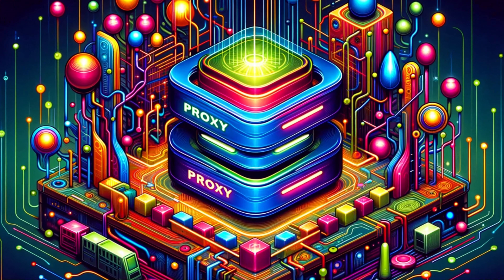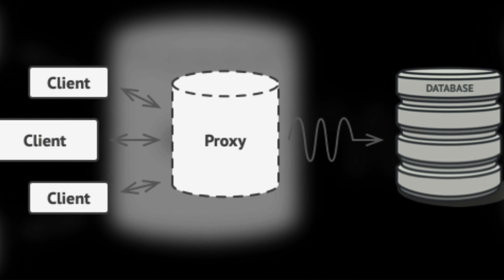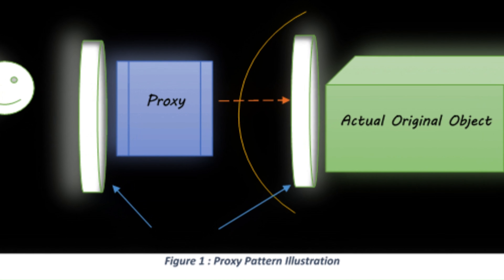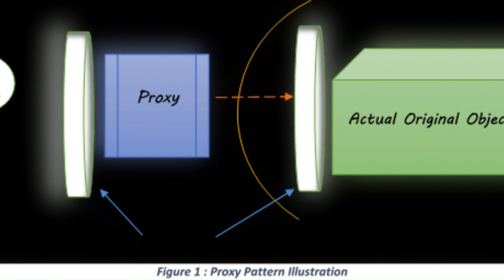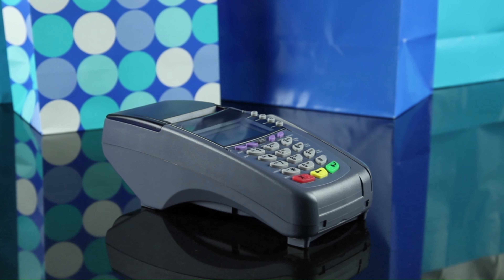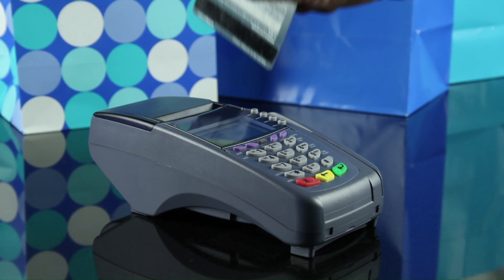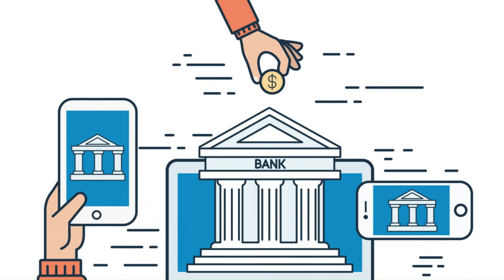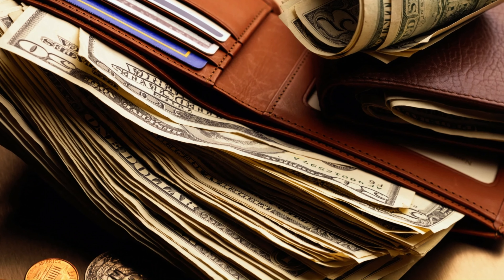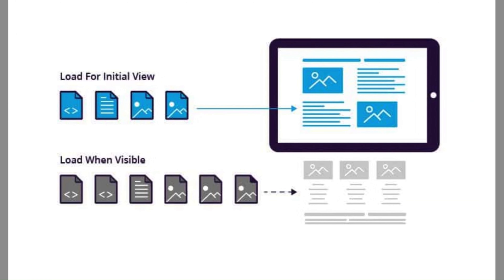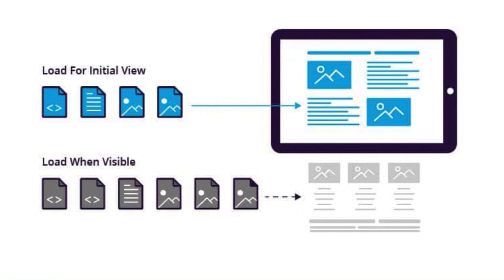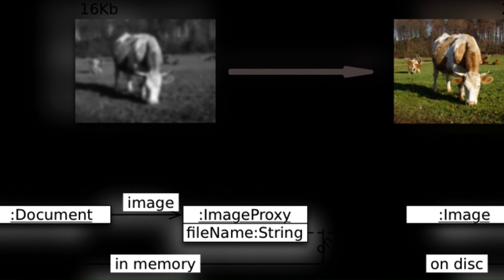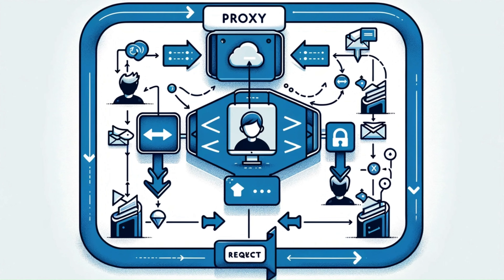Now let's talk about the Proxy pattern. This provides a placeholder for another object to control access to it, used when you want a simplified version of a complex or heavy object. A credit card is typically a proxy for your actual bank account — it allows you to access the money in your account without carrying the actual cash. In software, a proxy could be used for lazy loading of a large image, using a placeholder until the real image is actually needed.